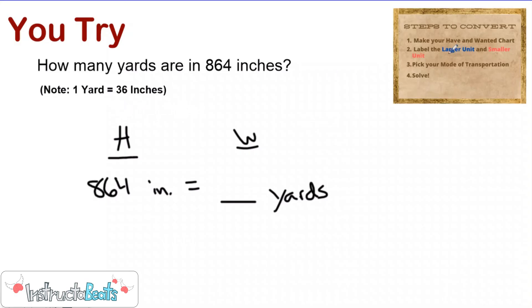Next, we need to label our larger unit and smaller unit. So one yard would be larger than one inch. So my yards are larger and my inches are smaller, which means I'm going to be taking my saddle because I'm going from smaller to larger, which means I need to divide. Again, the way I remember that is I'm going from smaller to larger and then a D is in the middle of saddle. So that would be divide.